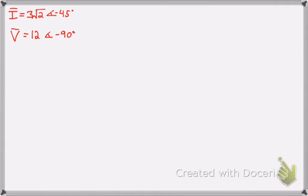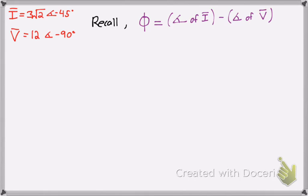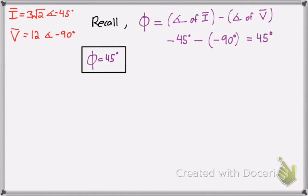To recap: we have I-bar and V-bar calculated from the previous page. Phi is simply the subtraction of the angle of I-bar from the angle of V-bar — it's a subtraction because the shorthand uses e to the j·theta, and dividing exponents means subtracting. So we get negative 45 degrees minus negative 90 degrees, which gives phi equals 45 degrees.